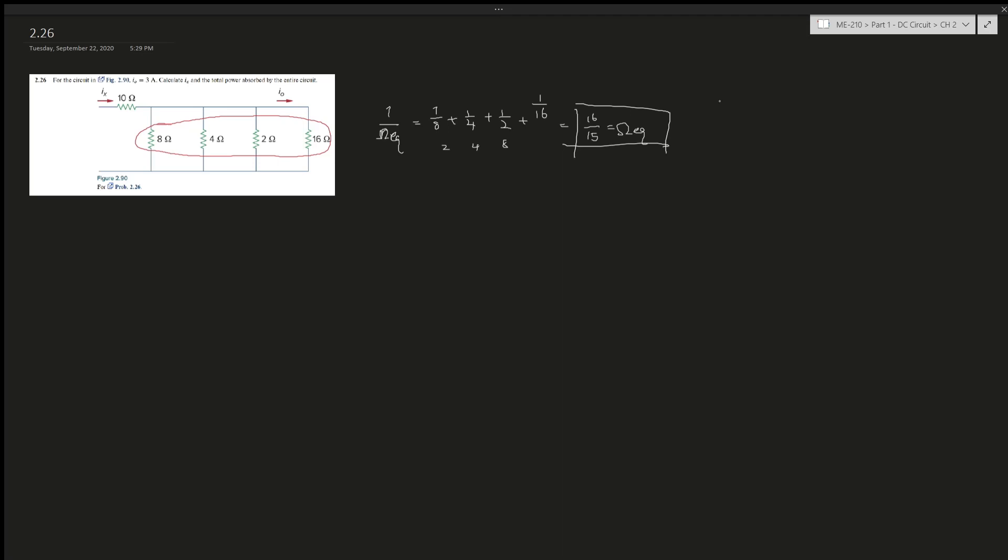Next, we realize that according to Ohm's law, i times ohms gives you volts. So we have i naught going through the 16 ohm resistor, which is 3 times 16, which gives you 48 volts.